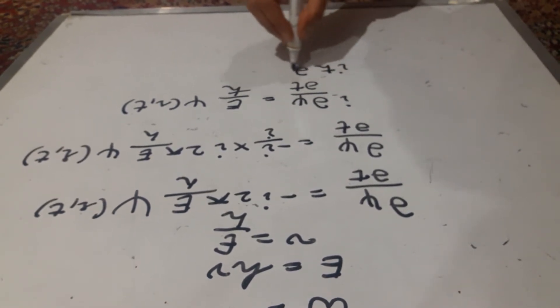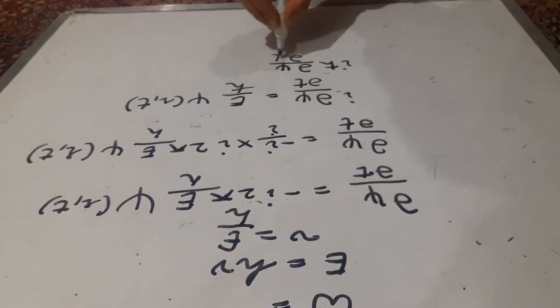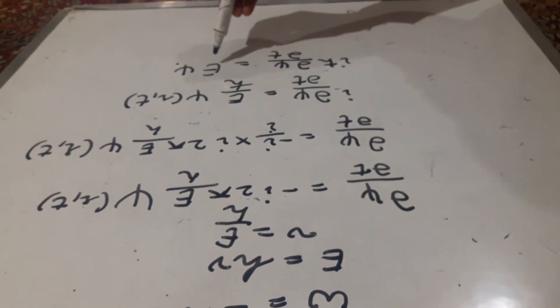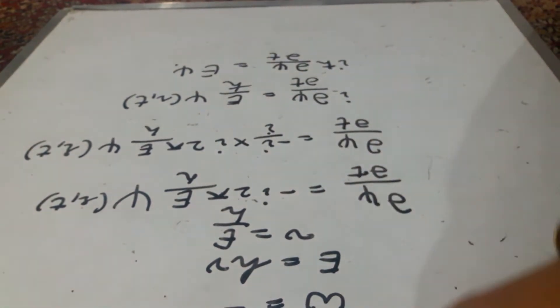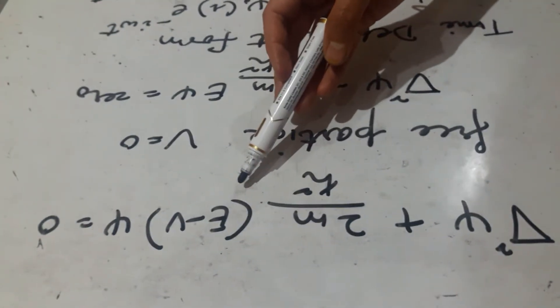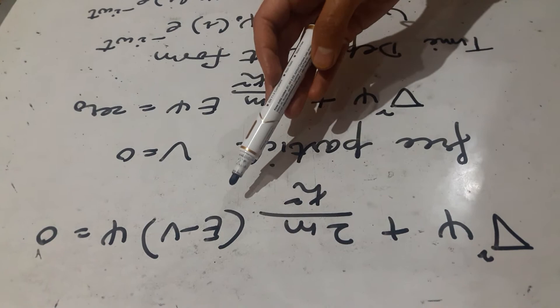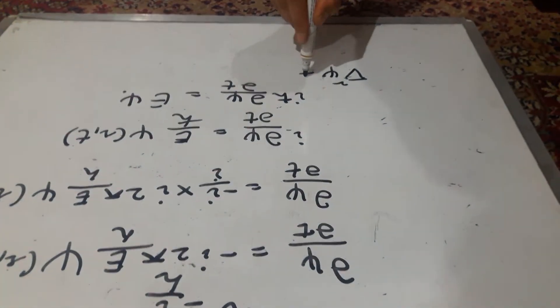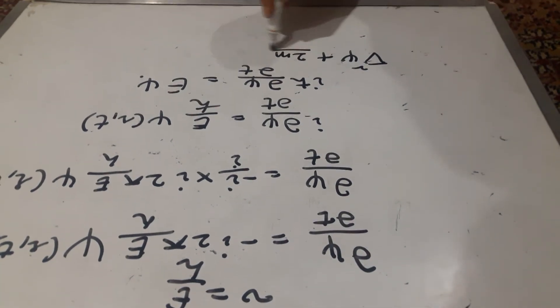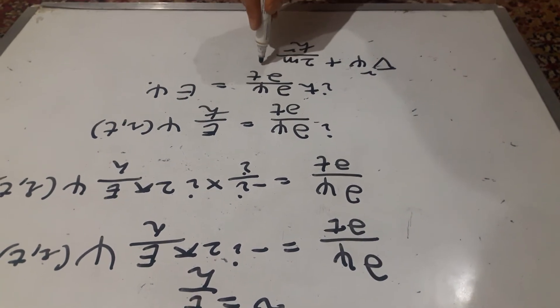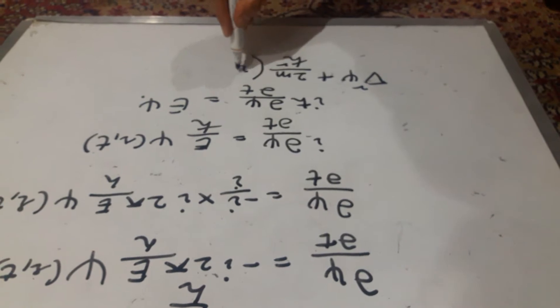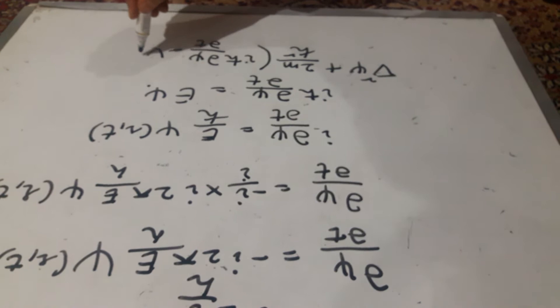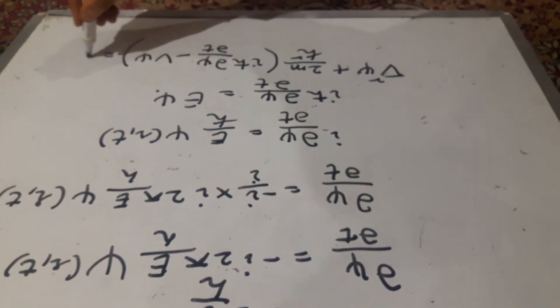So i h cross dow psi by dow t is equal to e psi. This is our equation. Now for this e psi, we will substitute here in the time independent form. So del square psi plus 2m by h cross square. For e, we will write i h cross dow psi by dow t minus v psi is equal to 0.